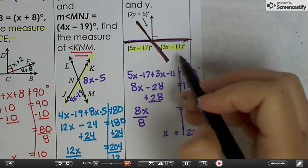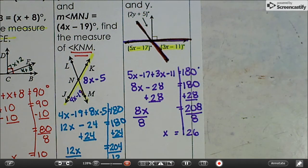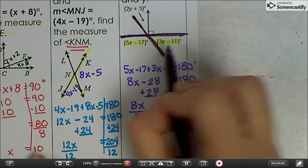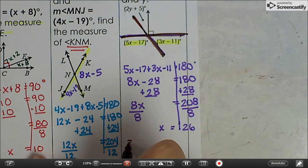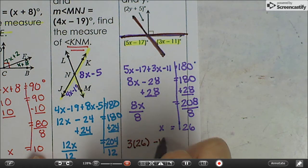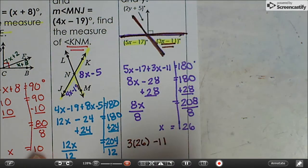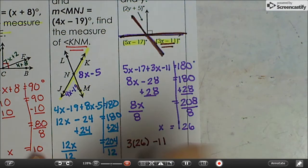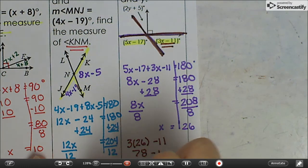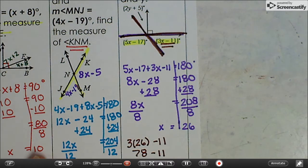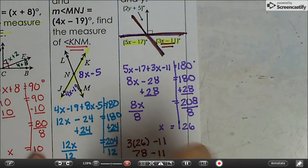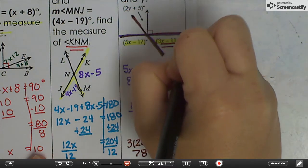I'm going to go with that way, just because I feel like that might be a better example. So I'm going to plug in 3 times 26 minus 11. That's from this angle up here. That's 78 minus 11, and 78 minus 11 is 67 degrees. So this angle is 67 degrees.